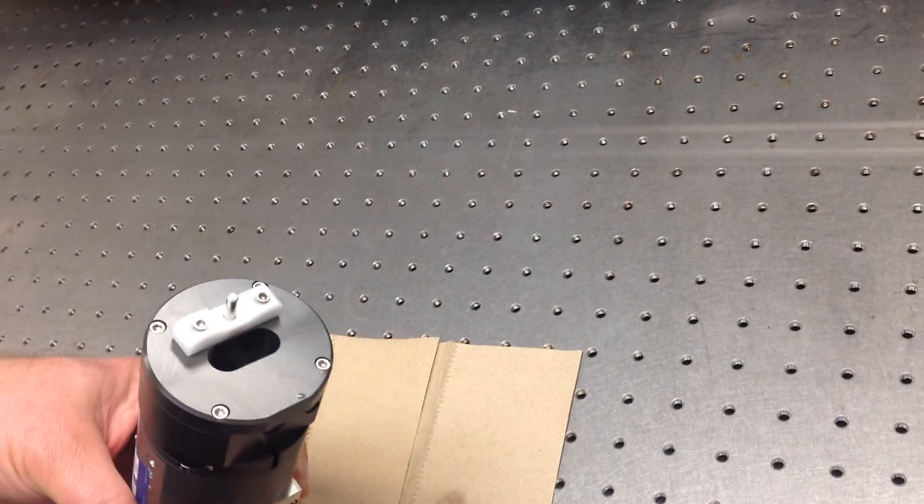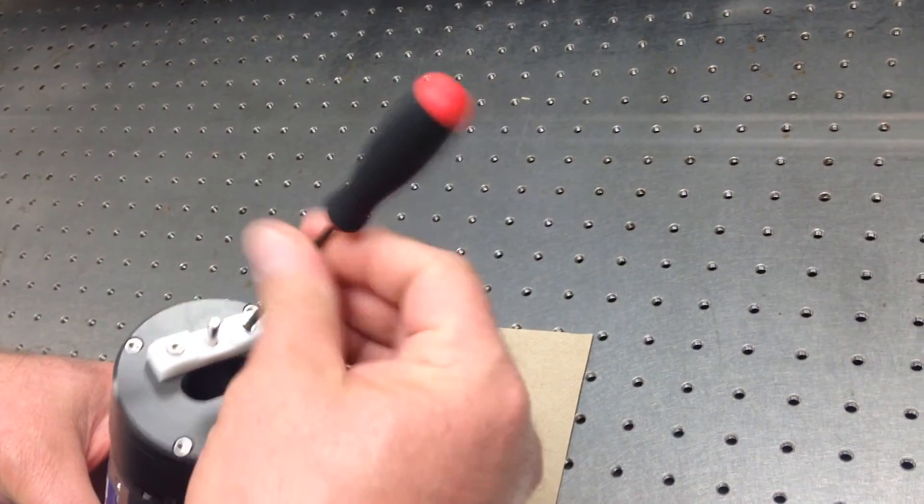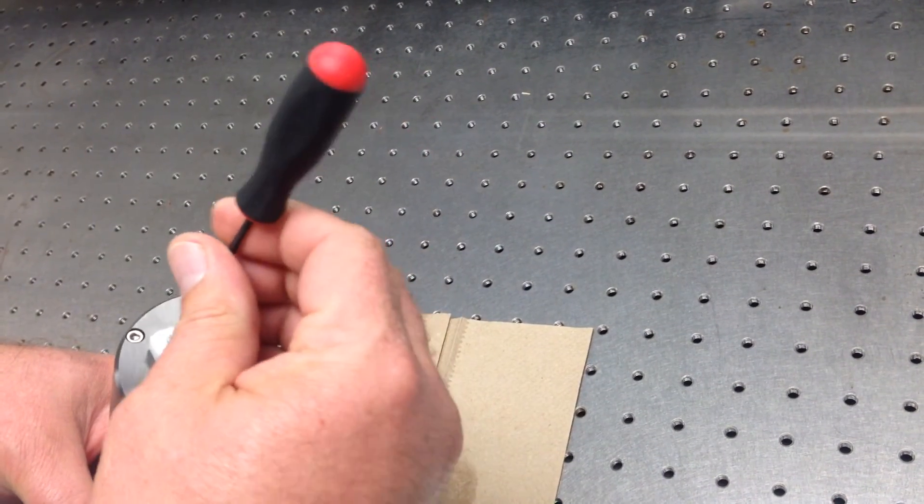All right. You just slide the clamp back down, retainer. Start tightening it up.